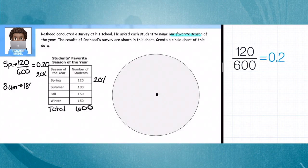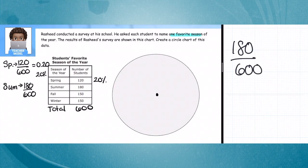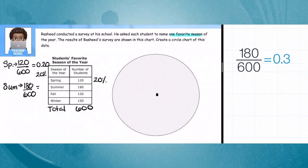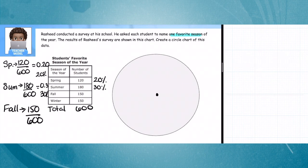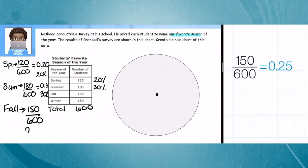Summer is 180 out of 600, so it is a larger one—180 out of 600. So it's 0.3 or 30%, and that's our highest number. Fall and winter are the same: 150 out of 600. That is 0.25 or 25%. Fall and winter had the same 150 and 150, so here's 25% and here's 25%.